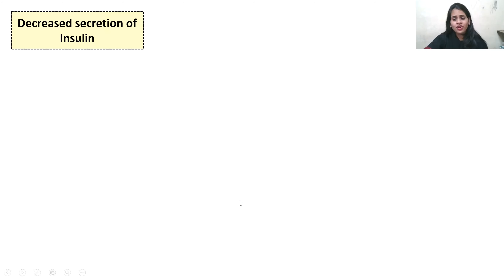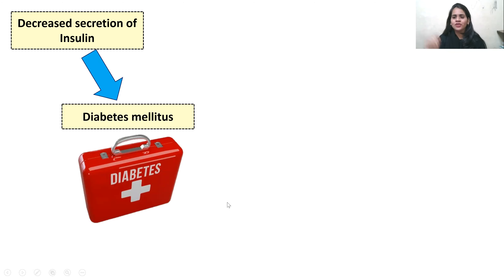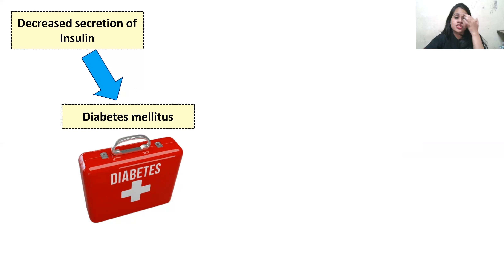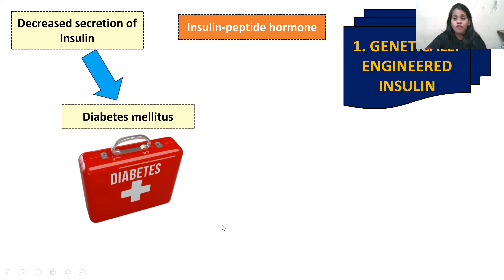First, let me talk a little bit about insulin. Which organ secretes insulin? Yes, it's secreted by the pancreas — specifically from the endocrine part. Now, what happens when insulin production in our body reduces? It leads to a disease called diabetes mellitus, because the function of insulin is to absorb glucose from our blood. When there is decreased production of insulin, it cannot maintain blood sugar levels, leading to diabetes mellitus.